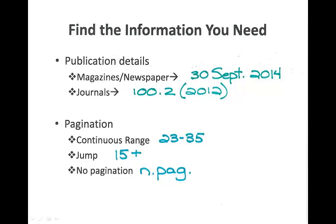Publication details can also be found in the header and footer when looking at the print version. For a magazine or newspaper, we want the day, month, and year, because those publications come out on a regular basis and the date is important. Journals are a little different. They are one big publication split into fewer smaller ones throughout the year. So what we want is the volume — the big chunk — the issue — that little chunk that came out — and the year that particular volume and issue was published.